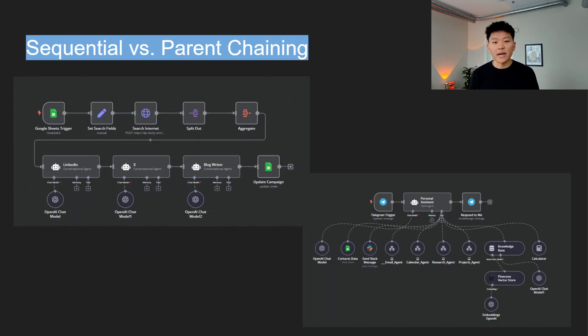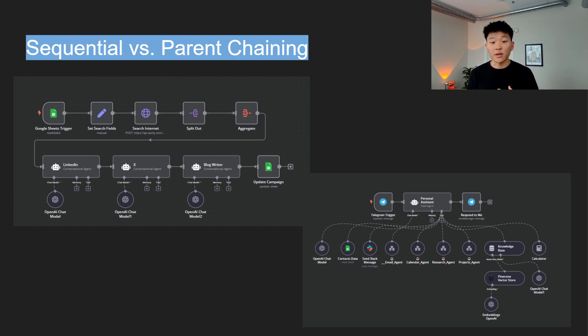Okay, so now this relates back to thinking about your inputs and your outputs. Sequential versus parent chaining. On the left, we have sequential and on the right we have parent chaining. So what is sequential chaining? It's exactly what it sounds like. One agent performs its task, passes the output directly to a next agent, which takes that input from the agent and then performs a task, and then passes the output to another agent. This linear approach is straightforward and it works well for processes where each step depends on the previous one.